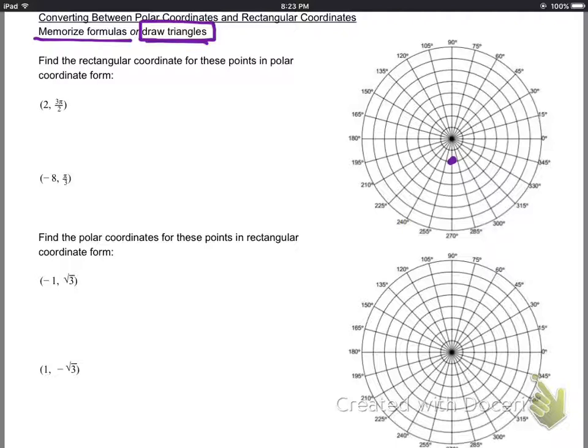Let's say our point is 2 comma 3 pi over 2, that's right there, you see that point. I'm going to draw the Cartesian coordinates on top of it, so we have our x and our y, and if the point ends up on the axis, like this purple one does right here.